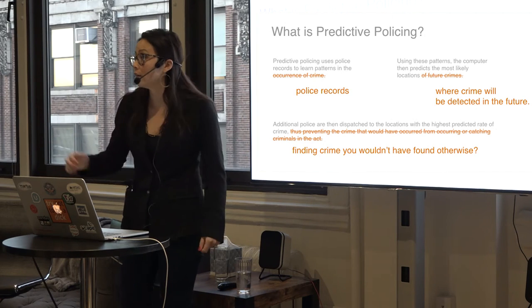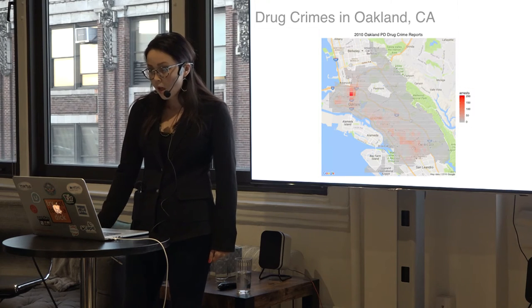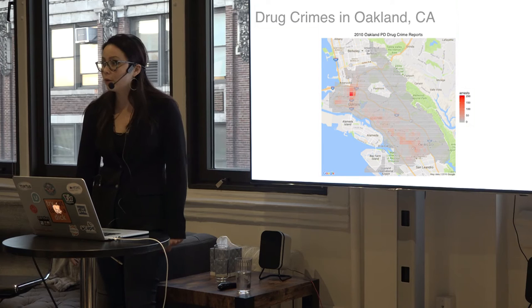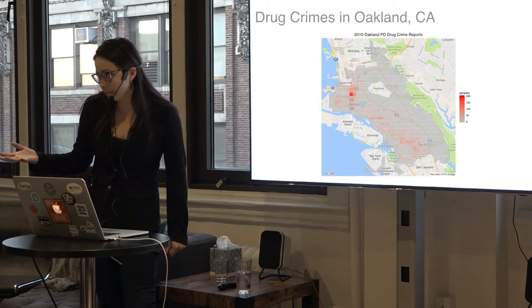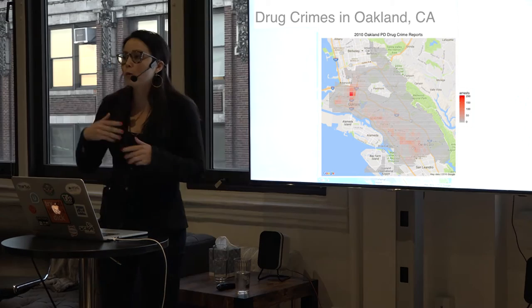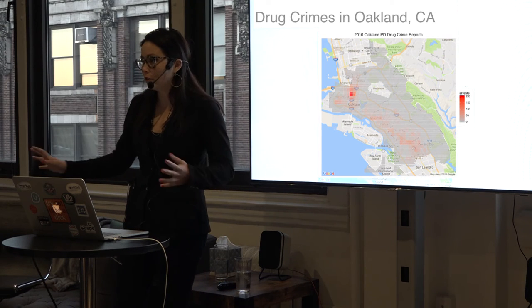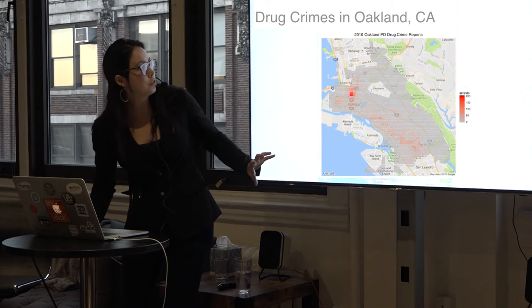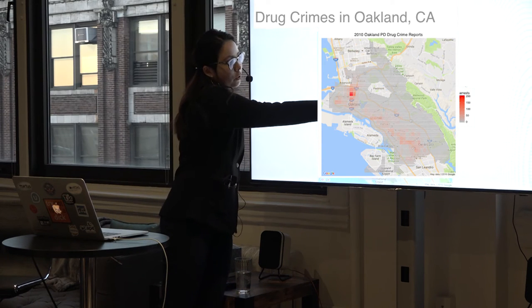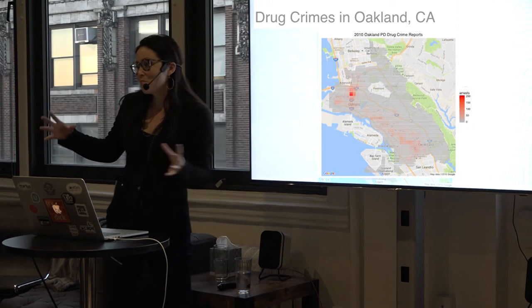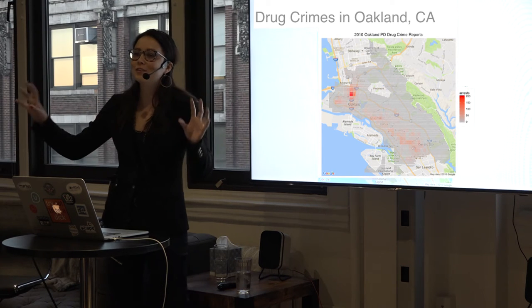So then, based on those predictions, additional police are dispatched to the locations with the highest predicted rate of crime, thus supposedly preventing crime or catching criminals in the act. But what happens if you find crime in locations where you're sent that you wouldn't have found anyway? Now on to the case study of Oakland, California. This shows all the drug crime reports in Oakland in 2010, obtained from Open Oakland — a source for government data from the city. Note that Piedmont, which is a separate administrative region within Oakland, is excluded because it has different data collection.